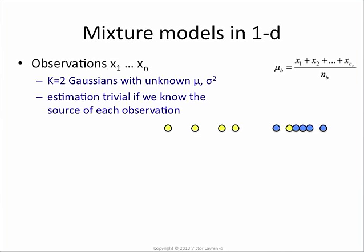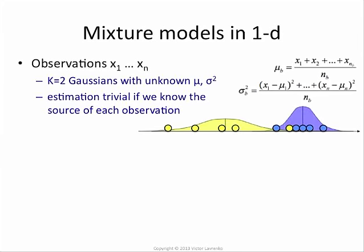For the blue Gaussian, say I have five data points that came from it. All I need to do is take their x values, add them up, divide by five, and that gives me an estimate of the mean of the blue Gaussian. The same thing for the variance: take their x values, subtract from them the blue mean mu_b, take the squared deviations from the blue mean, average them out, and that is your estimate for the variance of that Gaussian. I can do it for the blue, I can do it for the yellow, and I'll get my estimates of the two Gaussians.